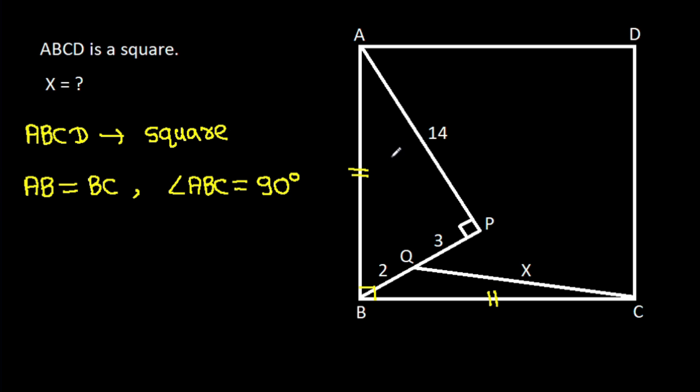And now, if this angle is alpha, then this angle will be 90 degrees minus alpha. So this angle will be again alpha. And now, if we extend BP and from point C make a perpendicular on BP, suppose this point is M, then...